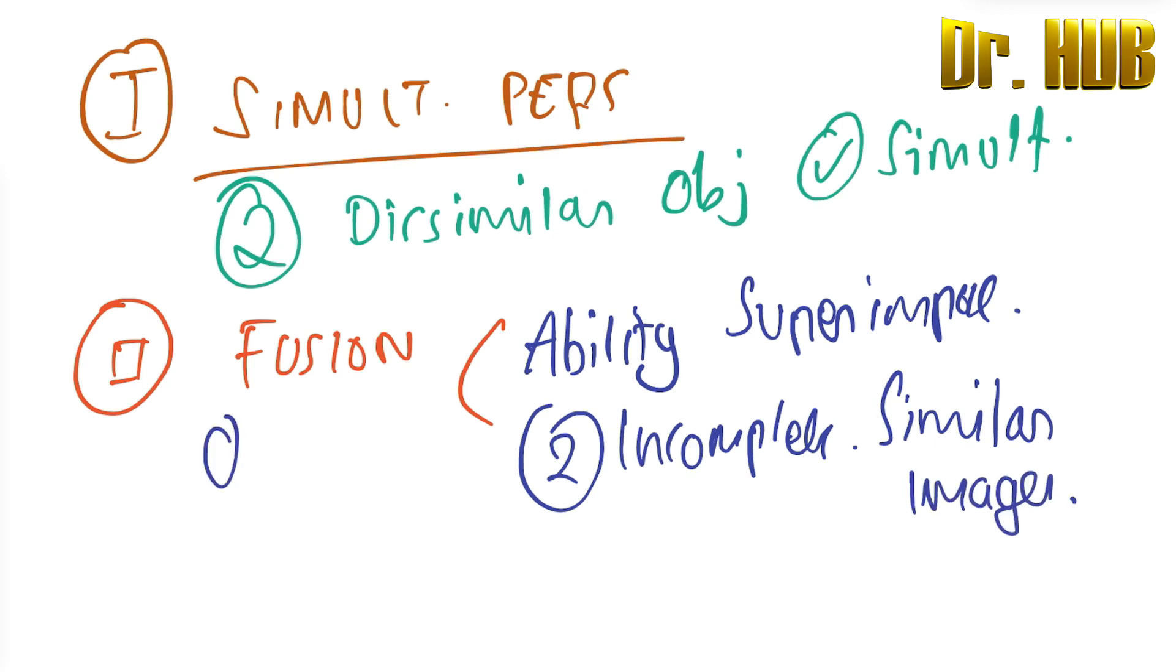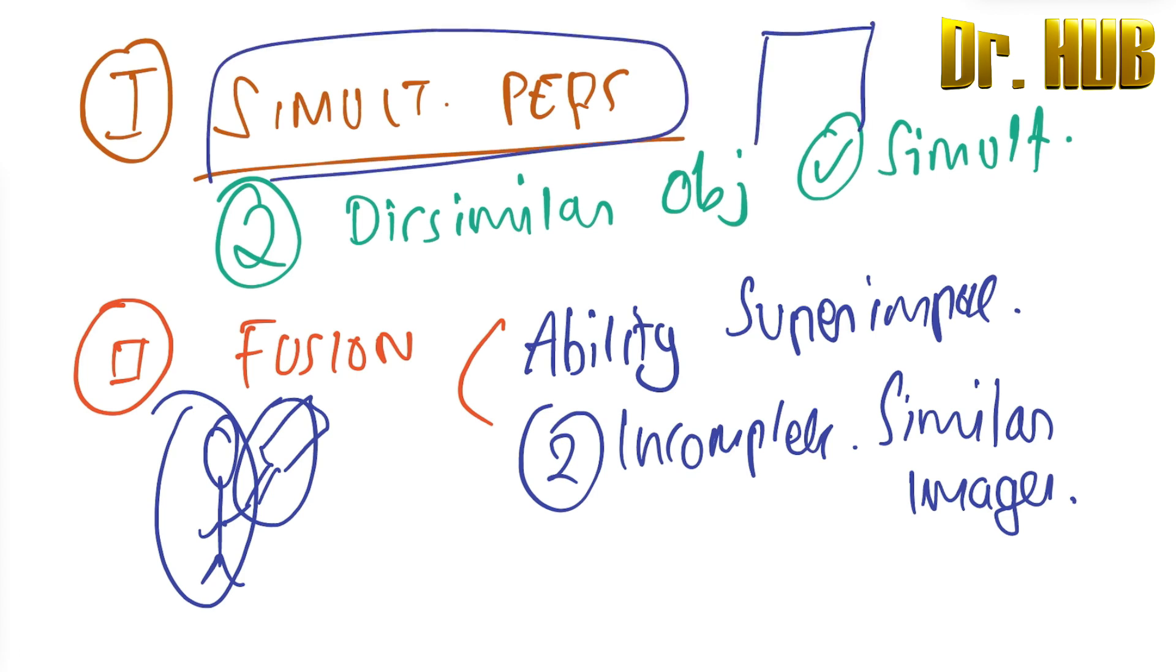So what it means is, say you have a stick figure and then you have a bat in the hand. So when these two come together, this is known as fusion. Whereas simultaneous perception is, say you have a lion and it goes inside a cage. So this is known as simultaneous perception.